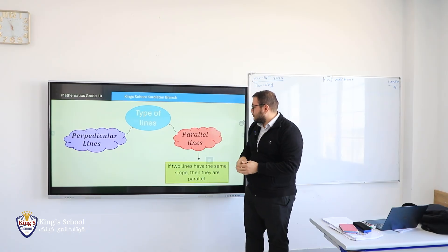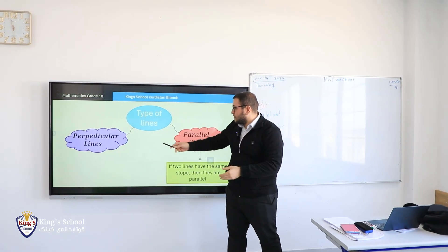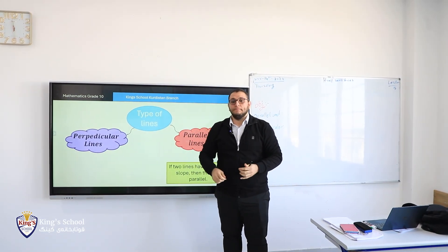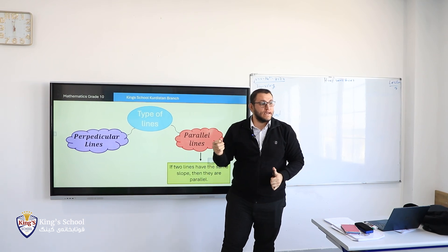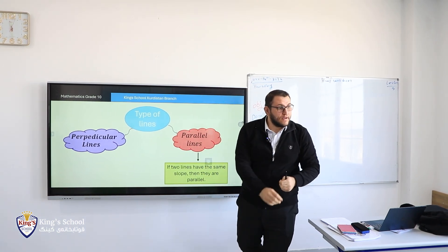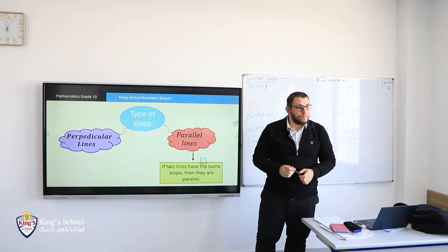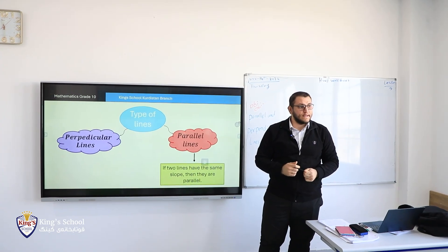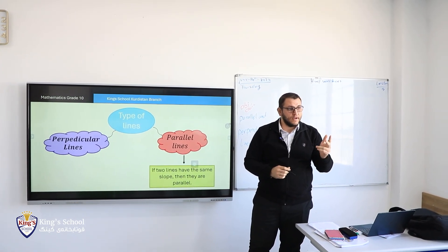Now we understood parallel lines. How we know two lines are perpendicular? Eunice? If two non-vertical lines, the product is negative one. Is the product of both slopes? Negative one. Negative one.